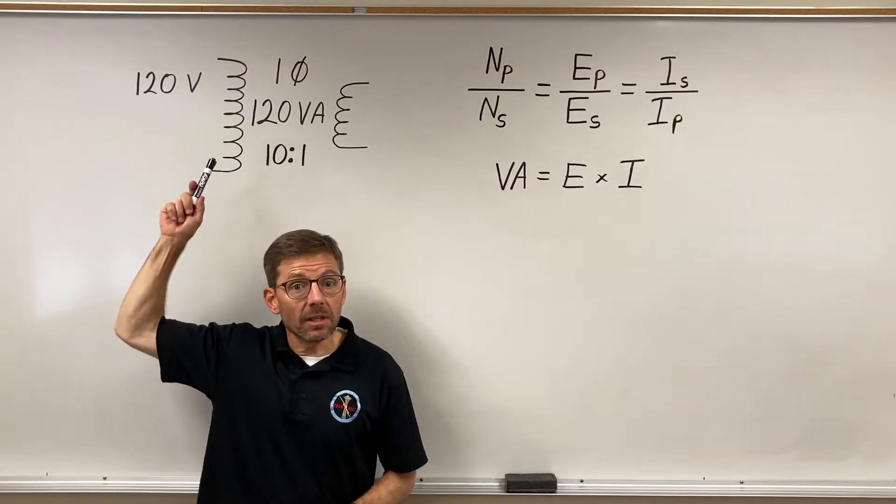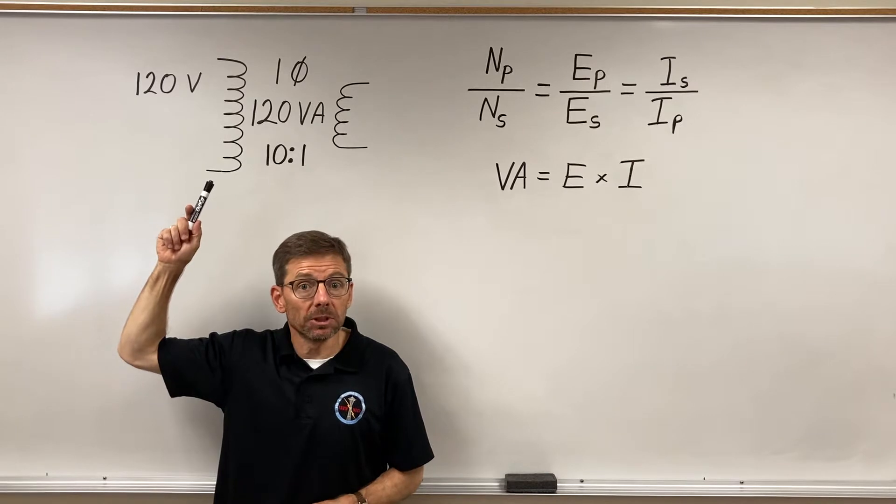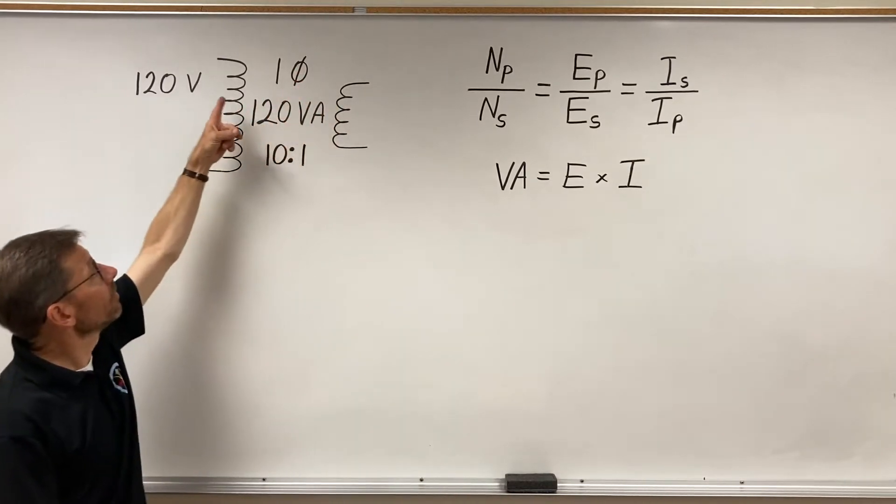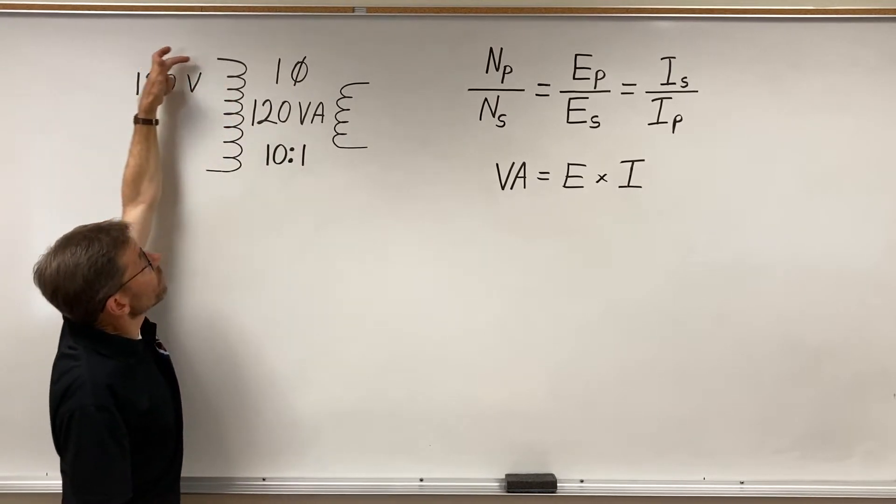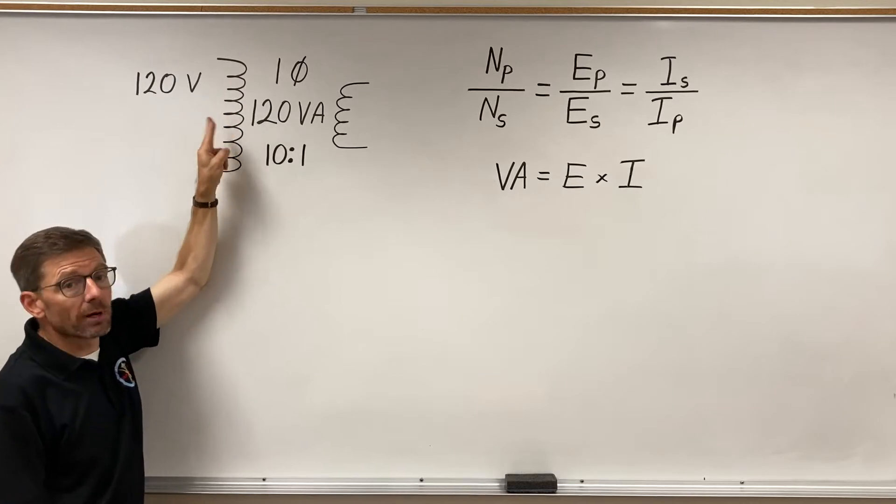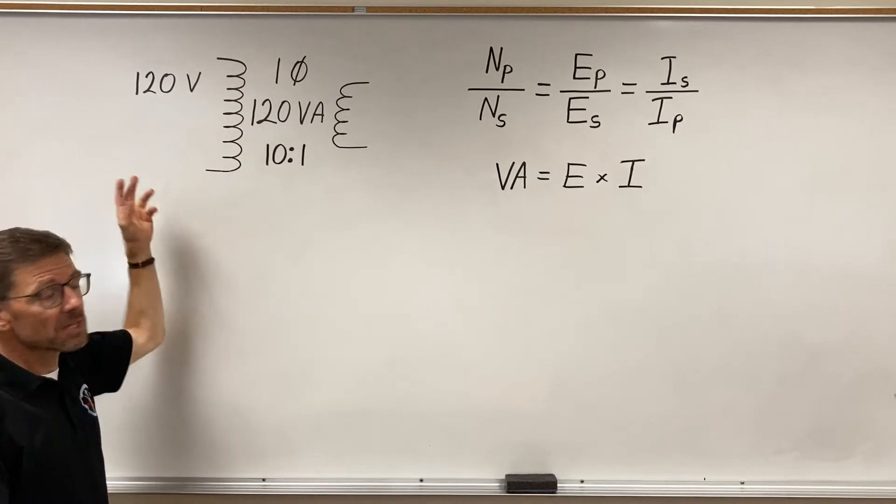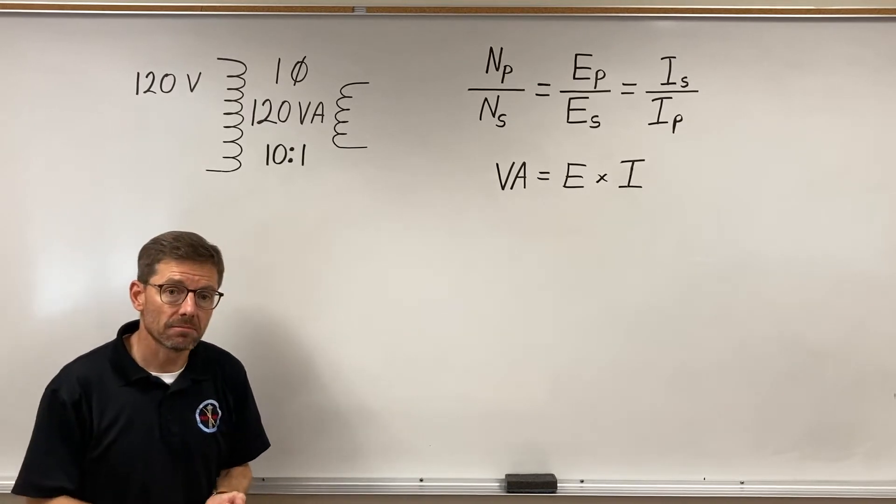What I have here is a schematic of a simple single phase transformer. There's a symbol for single phase, and what that basically means is I have a wire coming in from the source, wraps around the core of course, and then a return path. A single voltage coming in, wire in, return path, single phase.